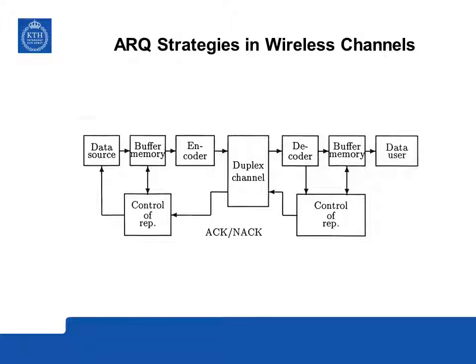If the decoder detects an erroneous message, a negative acknowledgement is sent back over the channel, meaning the memory content at the transmitter side cannot be dropped. Instead we have to re-encode and retransmit the message over the duplex channel until the decoder decides the message is correctly received.